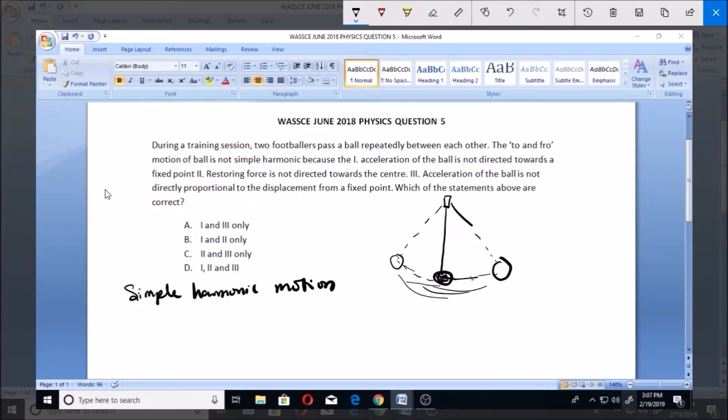It's making this motion over a fixed point. Then another form of simple harmonic motion is when you have a helical spring and you attach a load to this helical spring.